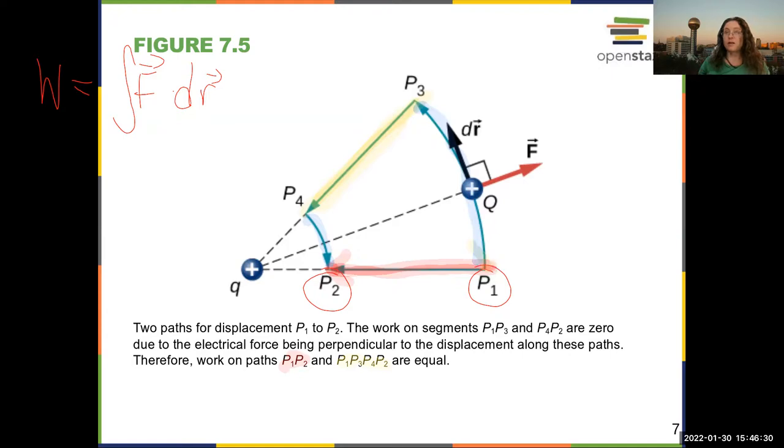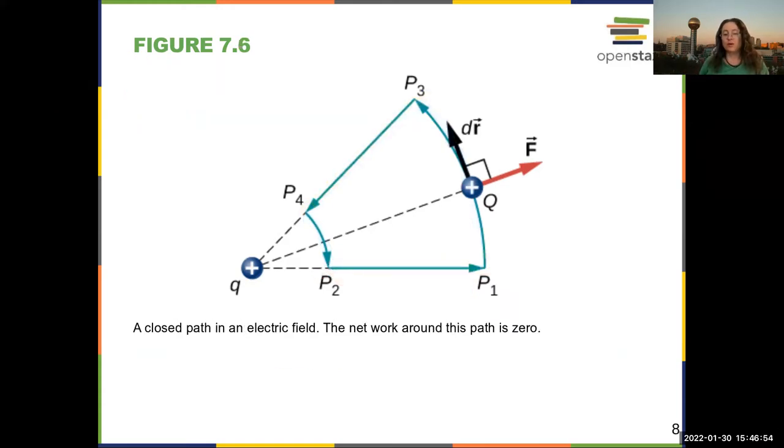Now, if you had a non-conservative force, that would not be true. If you had friction, you're losing energy as you go along. The energy that you're putting that's going into friction is going into heat in the system, and so you can't really get it back easily.